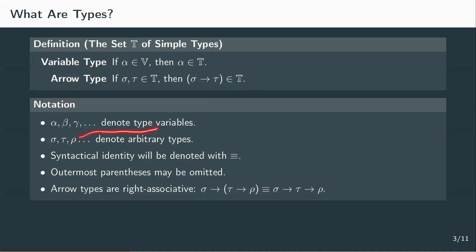So sigma, tau, and rho can stand for a variable type, but also any kind of arrow type. We're going to denote syntactical identity by the equivalent sign and we can leave out the outermost parentheses. Arrow types, just like abstractions in lambda terms, are right associative, so we can also leave out the corresponding parentheses.